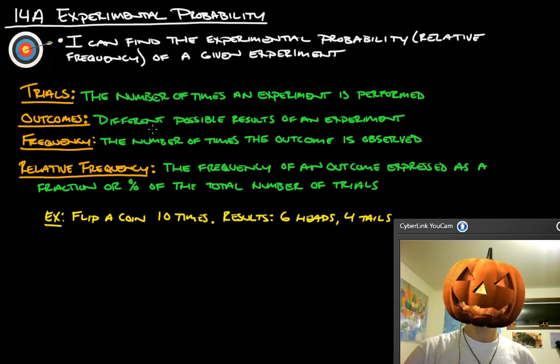The outcomes are the different possible results of an experiment. The frequency is the number of times the outcome is observed. And then relative frequency is the frequency of an outcome expressed as a fraction or percent of the total number of trials.